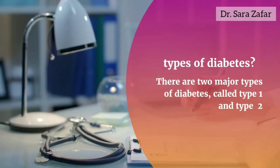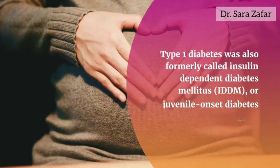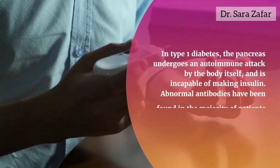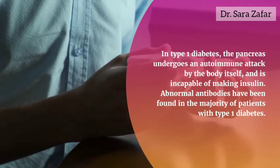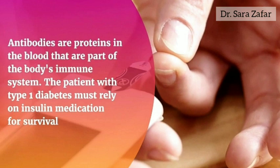There are two main types of diabetes: type 1 and type 2. Type 1 diabetes was also formerly called insulin-dependent diabetes. In type 1 diabetes, the pancreas undergoes an autoimmune attack by the body itself and is incapable of making insulin. Abnormal antibodies have been found in the majority of patients with type 1 diabetes. Antibodies are proteins in the blood that are part of the body's immune system. The patient with type 1 diabetes must rely on insulin medication for survival.